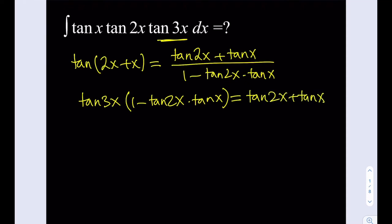And then I'm going to distribute the tangent 3x: tangent 3x minus tangent 3x times tangent 2x times tangent x. And that's going to give me the sum of tangent 2x and tangent x.